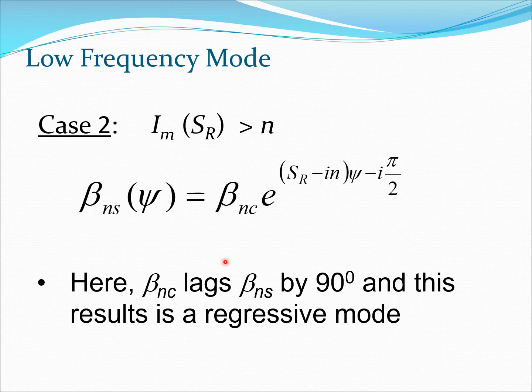There is a second case which is possible here if the SR value is greater than 1. This is a situation which can happen in a hingeless rotor. Essentially the new beta value has to be higher like 1.12 per rev or something like that and then you will get this case. Again we write the equation beta NS in terms of beta NC, and now you see this is the form of this equation. Here beta NC lags beta NS by 90 degrees and this results in a regressive mode.